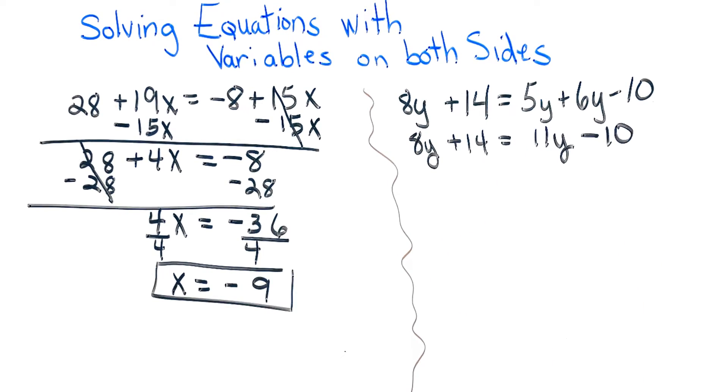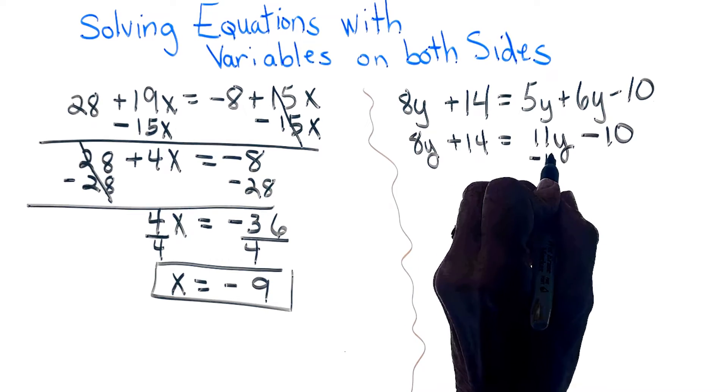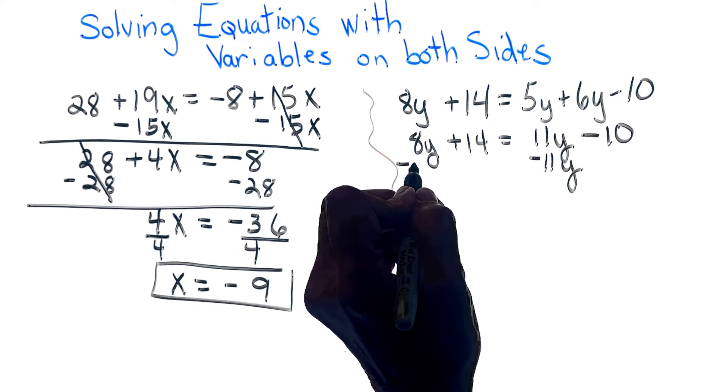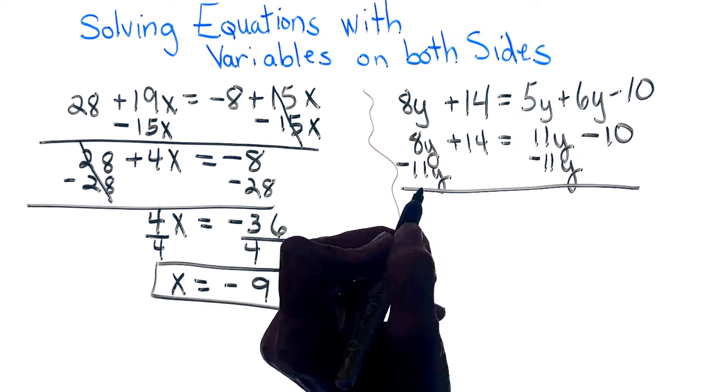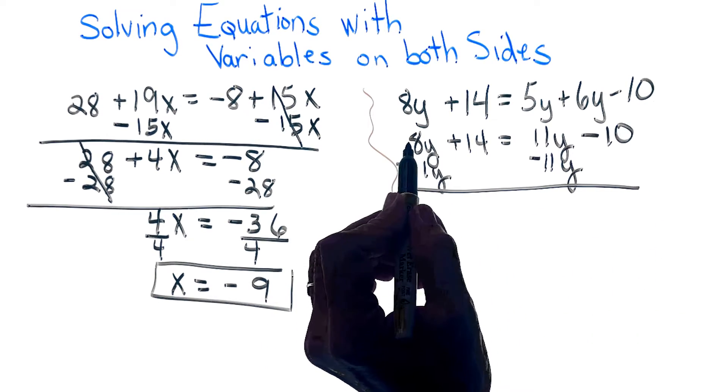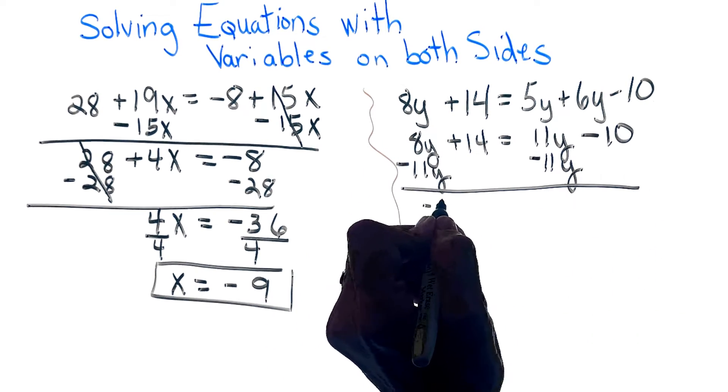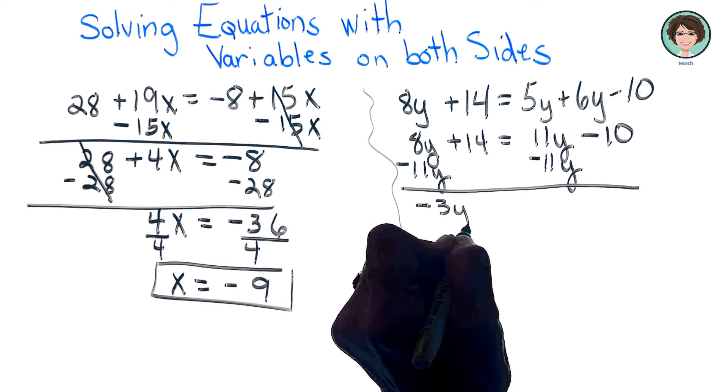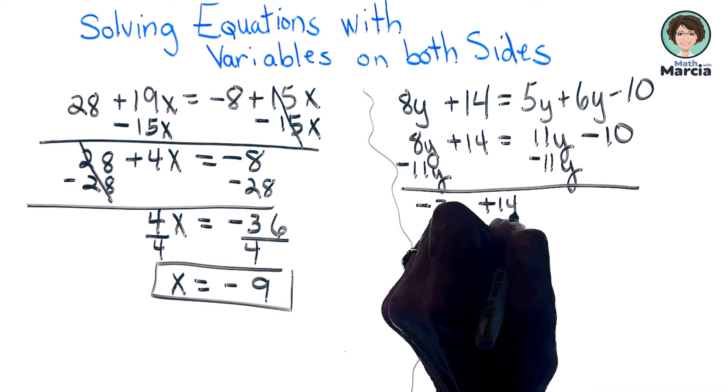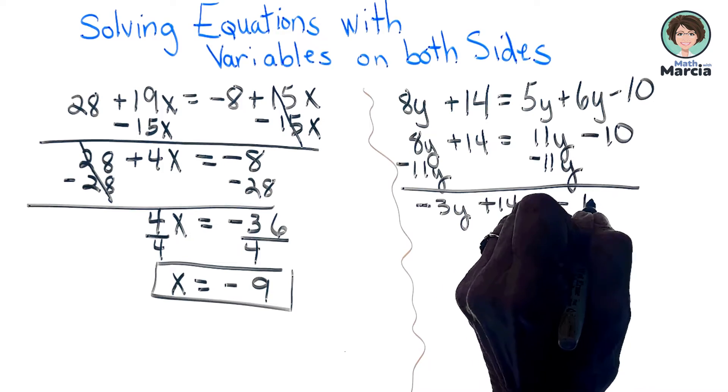So now I am going to bring my variable to the left side. Usually I take it to the left. And here I get 8 minus 11 is a negative 3y plus 14 equals a negative 10.